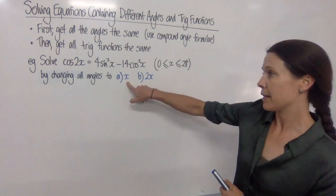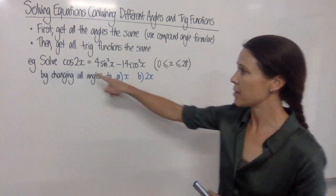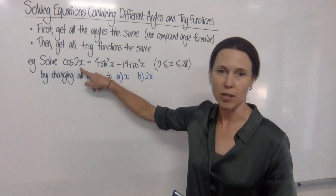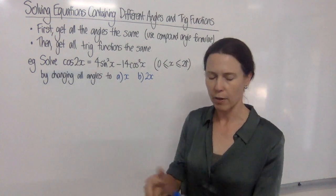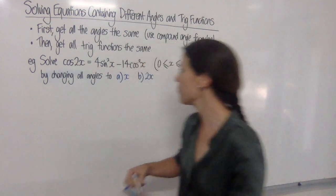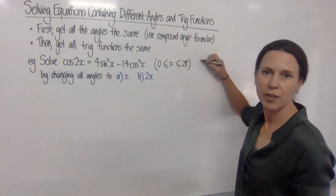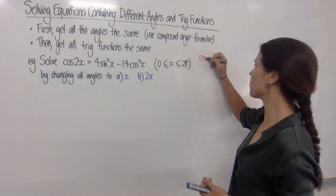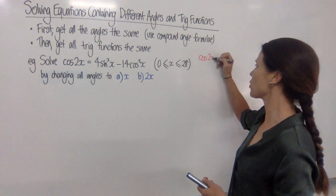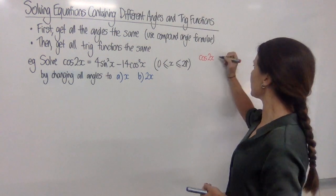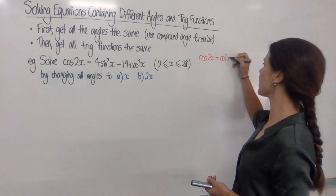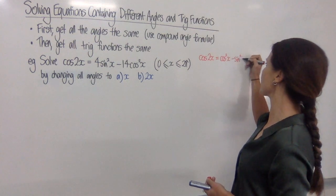The first one says change them all to x. So that means that cos 2x has to change. So our thinking over on the side would be, all right, what does cos 2x equal? Now, if you're not sure, just jotting things over in your margin really gives you that feeling that you're making headway without actually starting on your main working. Now, cos of 2x, I remember, is cos squared x minus sin squared x.